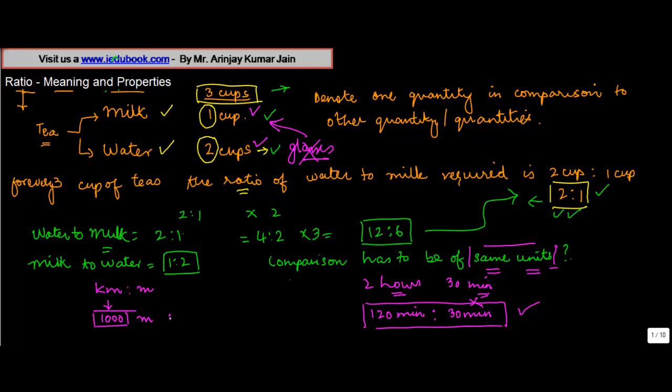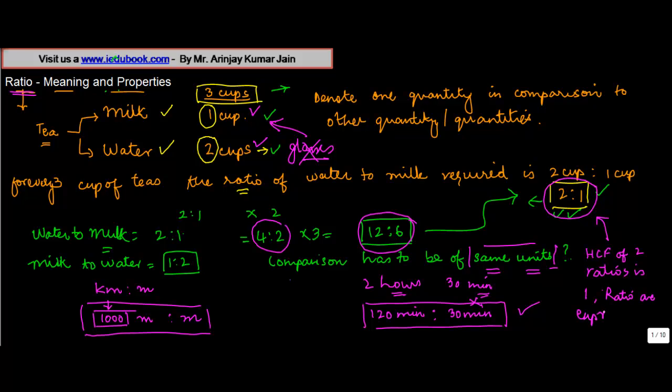So the unit has to be the same. You cannot have different units while you are comparing the ratios. Now a ratio basically once it reaches a stage - if you notice I told you that two is to one is the same thing as four is to two is the same thing as twelve is to six. Now in cases where the HCF of two ratios is one, then we say that the ratio are expressed in their simplest forms.